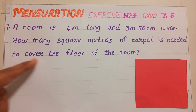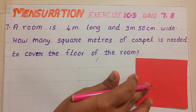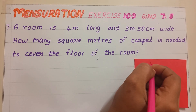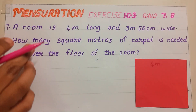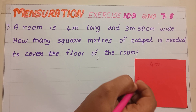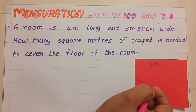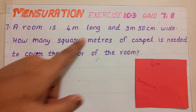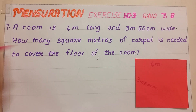See, this is our room and its length is 4 meter. 4 meter long and width — that means breadth — is 3 meter 50 centimeter. We are required to find how many square meters of carpet is needed to cover the floor of the room.